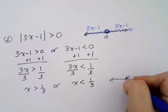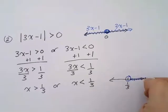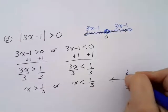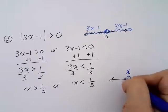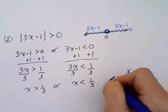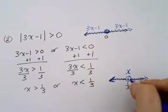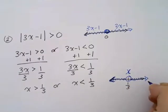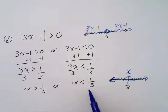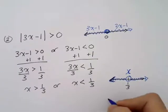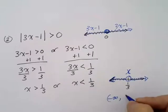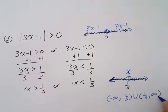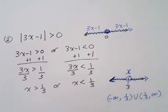So I'm shading all real numbers except for 1/3. Since 1/3 is not included, I put an open circle there — or two parentheses going in both directions. This can be written in set-builder notation, or as an interval from negative infinity up to 1/3 (parenthesis), union (parenthesis), 1/3 to positive infinity. This is an interval that excludes just that one value at 1/3.